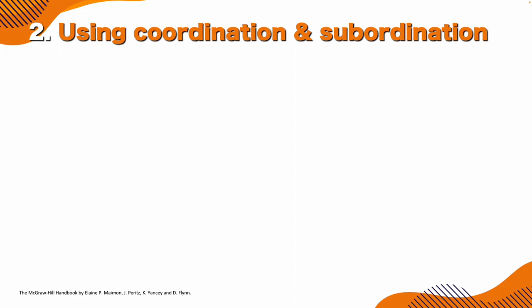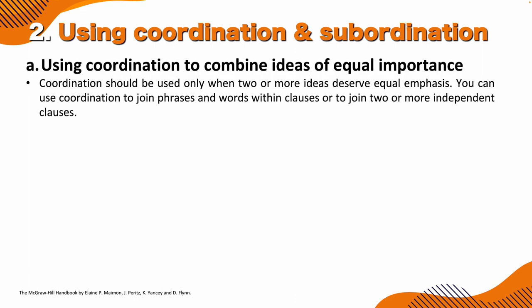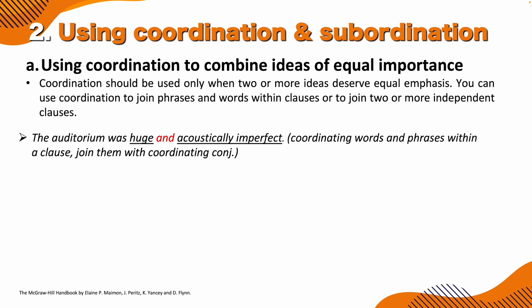Using coordination and subordination: coordination to combine ideas of equal importance. Coordination should be used only when two or more ideas deserve equal emphasis. You can use coordination to join phrases and words within clauses, or to join two or more independent clauses. For example: 'The auditorium was huge and acoustically imperfect.' Here, 'huge' is an adjective and 'acoustically imperfect' is an adjective phrase — an adverb plus an adjective.